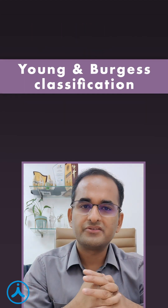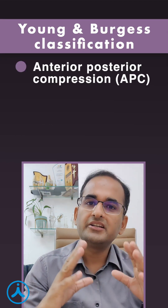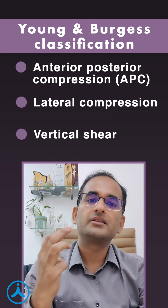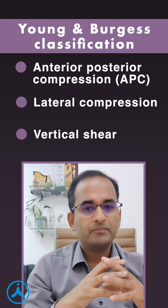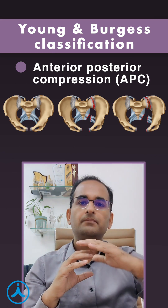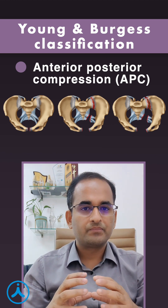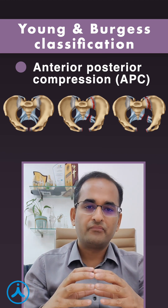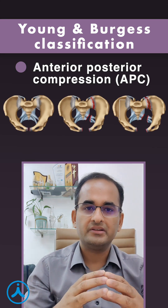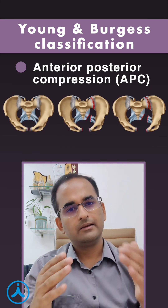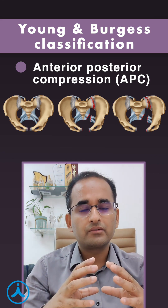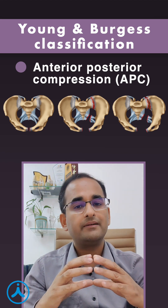Young's and Berger's classification is based on mechanism of injury. There are three types: anterior-posterior compression (APC), lateral compression, and vertical shear. In anterior-posterior compression, the force hits the pelvis from anterior to posterior, opening the pelvis like a book — these are called open book injuries. First the pubic symphysis opens up, then the pelvic floor ligaments like the sacrospinous and sacrotuberous ligaments give way, and then the sacroiliac ligaments disrupt as the severity of injury increases.